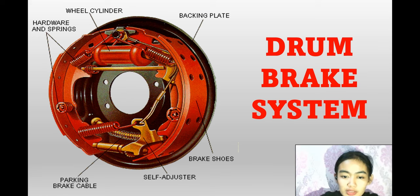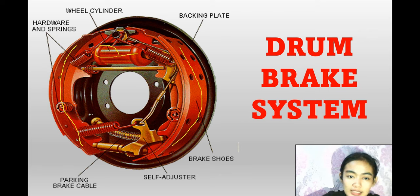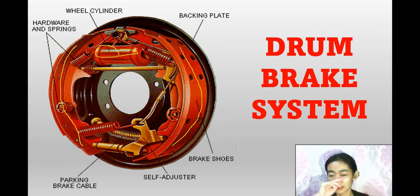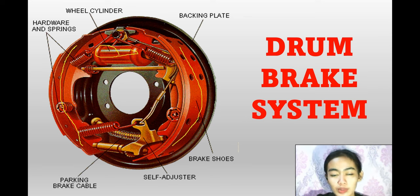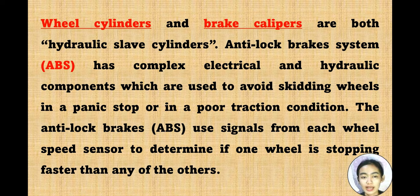In the drum brake diagram, you can see the brake shoes on both sides facing each other. The wheel cylinder is also visible. Wheel cylinders and brake calipers are both hydraulic slave cylinders — the wheel cylinder is part of the drum brake and the brake caliper is part of the disc brake.